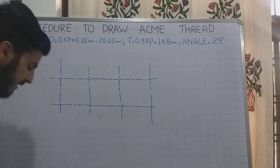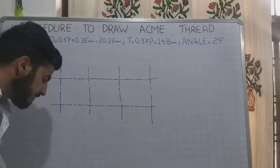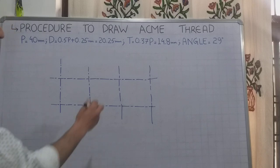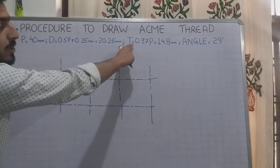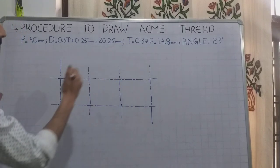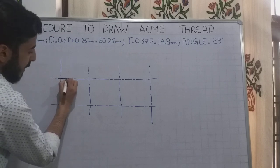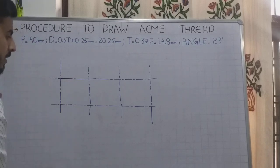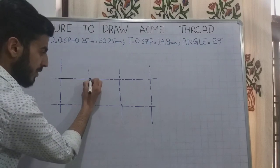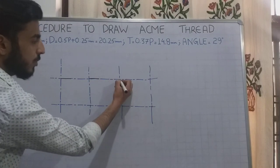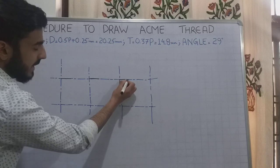After this, I already know the thickness of this thread is 14.8mm. I will mark 14.8mm horizontally with the pencil. This point is 14.8mm, and this point is 14.8mm.